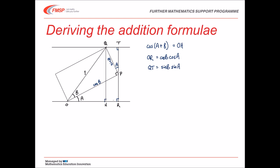The length I said we wanted was OH and that's equal to OR minus HR. So OH is cos of A plus B. And that's equal to OR, which we've just worked out as cos B cos A, which I'll write the other way around, cos A cos B. Take away HR, which is the same as QT, and that's sin B sin A, which I'll also write the other way around.